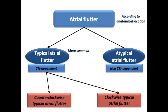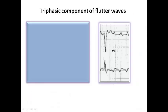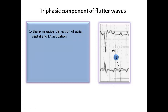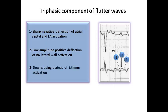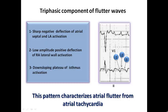Typical atrial flutter is further divided into two subtypes: counterclockwise typical atrial flutter and clockwise typical flutter, depending on the direction of the circuit. The flutter wave is described as a triphasic component wave composed of three parts. The first component in typical atrial flutter is a sharp negative deflection due to atrial septal and left atrial depolarization, followed by a low amplitude positive deflection representing right atrial lateral wall activation, then a down-sloping plateau of cavo-tricuspid isthmus activation. This appearance is most clear in lead 2 and lead V1.